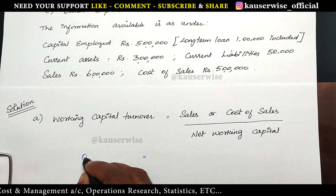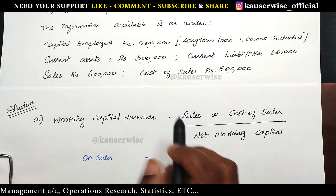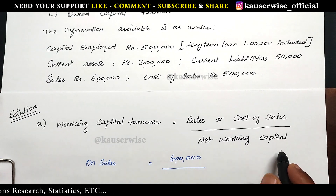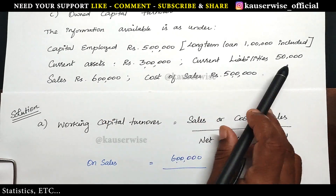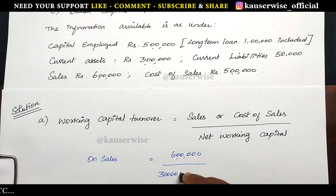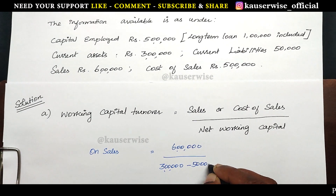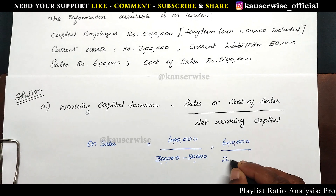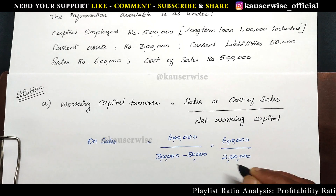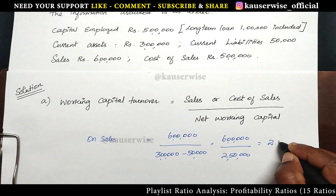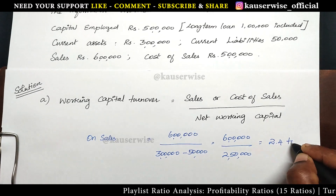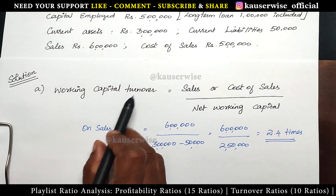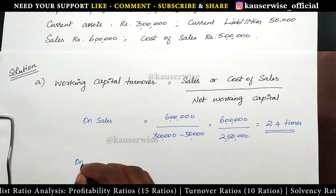Working capital turnover on sales: sales is 6 lakhs divided by net working capital, which equals 2.4 times. In the same way we are going to find out working capital turnover on cost of sales.